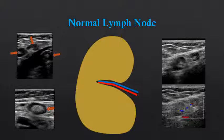The cortex can be a variable thickness, and the fatty hilum can be large or small. But there is a consistent orientation, and often hilar blood flow is detectable.